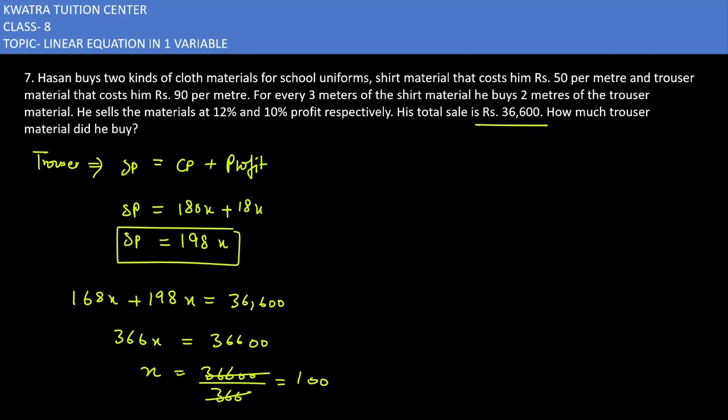So the quantity of trouser he had bought is 2x, which equals 2 times 100, which is 200 meters. Trouser is 200m and shirt is 300m. They may ask you in the examination, so that's how you can find the x value and substitute.